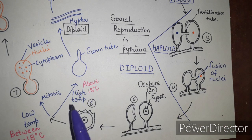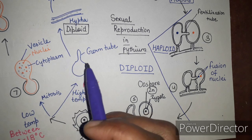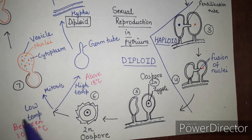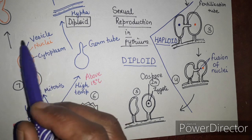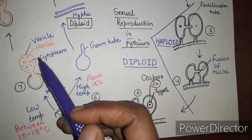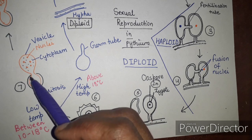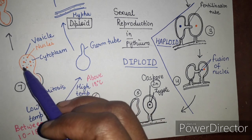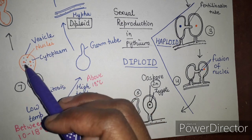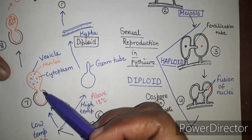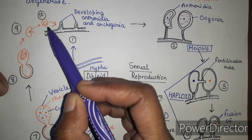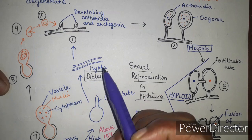Germination of the oospore depends on temperature. At high temperature (above 18°C), the oospore germinates directly by forming a germ tube to produce hyphae. At low temperature (10–18°C), the inner wall of the oospore bulges out to form a vesicle — the outer wall bursts and the inner wall forms a bag-like vesicle containing nuclei and cytoplasm, which then forms kidney-shaped zoospores that encyst and germinate to form hyphae.